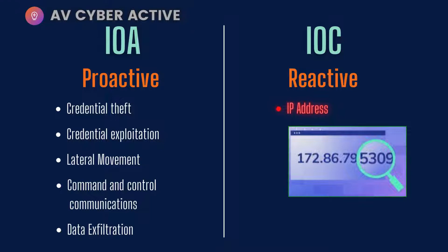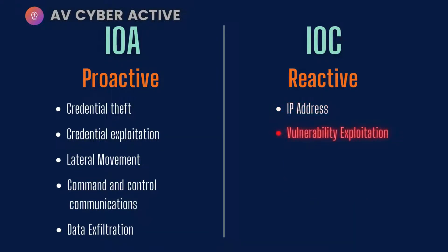That's a sign the perpetrator has made it through to your network and C2 communication is taking place, meaning your network has been compromised. Vulnerability exploitation is when you notice that common vulnerabilities found during vulnerability scans have started to be exploited.